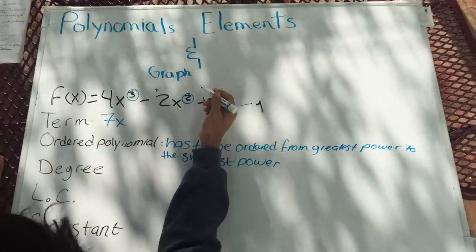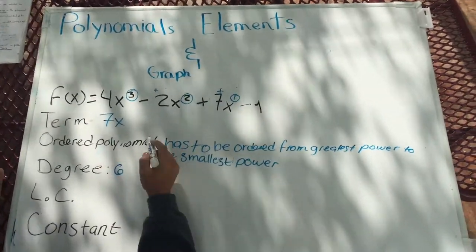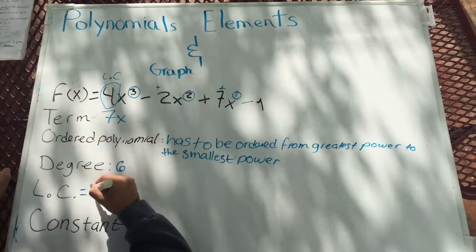Leading coefficient is the number of terms with the highest power. Constant term is the term with no variable.